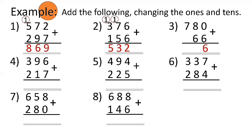Number 4: 396 plus 217 — 6 plus 7 is 13, bring down 3, carry 1 to the tens place. 9 plus 1 is 10, plus 1 is 11, bring down 1, carry 1 to hundreds. 3 plus 2 is 5 plus 1 is 6. Answer is 613. Number 5: 494 plus 225 — 4 plus 5 is 9. 9 plus 2 is 11, bring down 1, carry 1 to hundreds. Answer is 719.